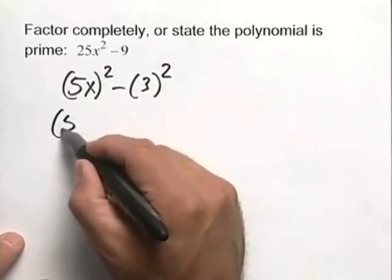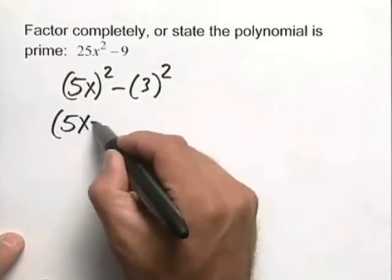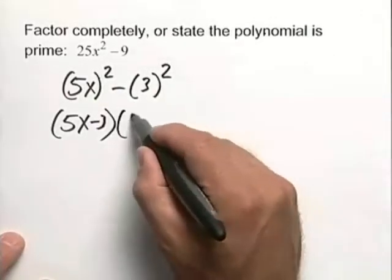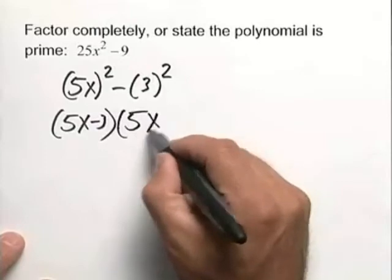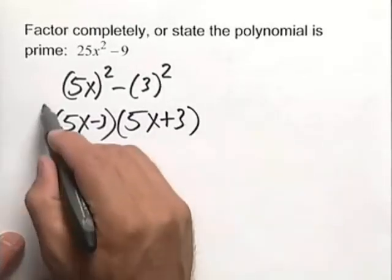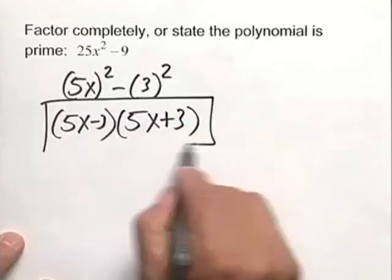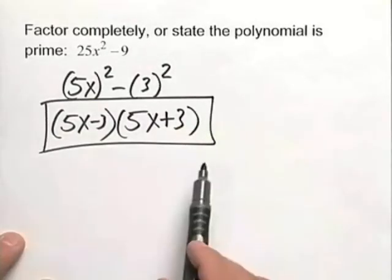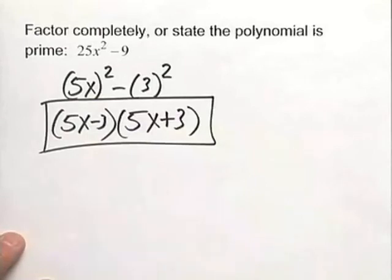This then factors into 5x minus 3 times 5x plus 3. And once again, anytime we factor, we can check by multiplication to show that this is factored correctly.